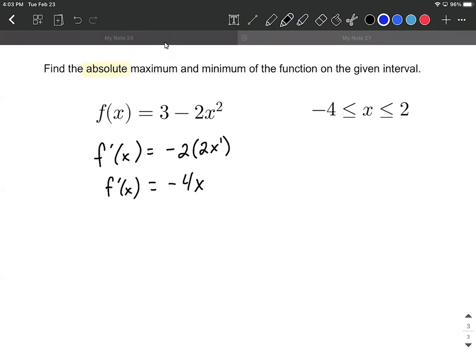Now maximums and minimums can occur whenever we get critical values or critical numbers when either the first derivative is equal to zero or when it's undefined. So in this case, if we want to figure out when does it equal zero, we'll just set it equal to zero, divide both sides by -4, and we get an x value of 0.